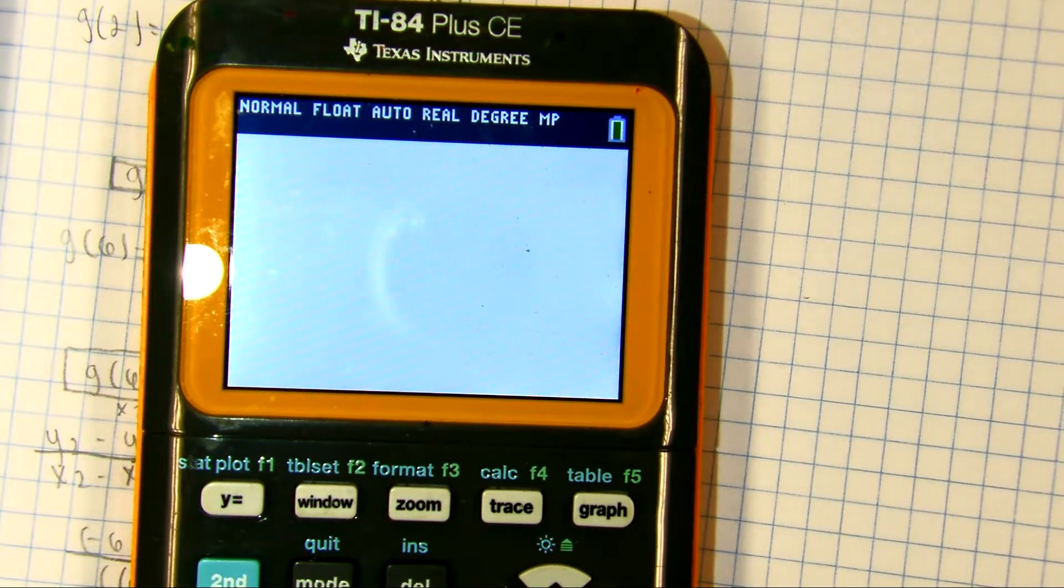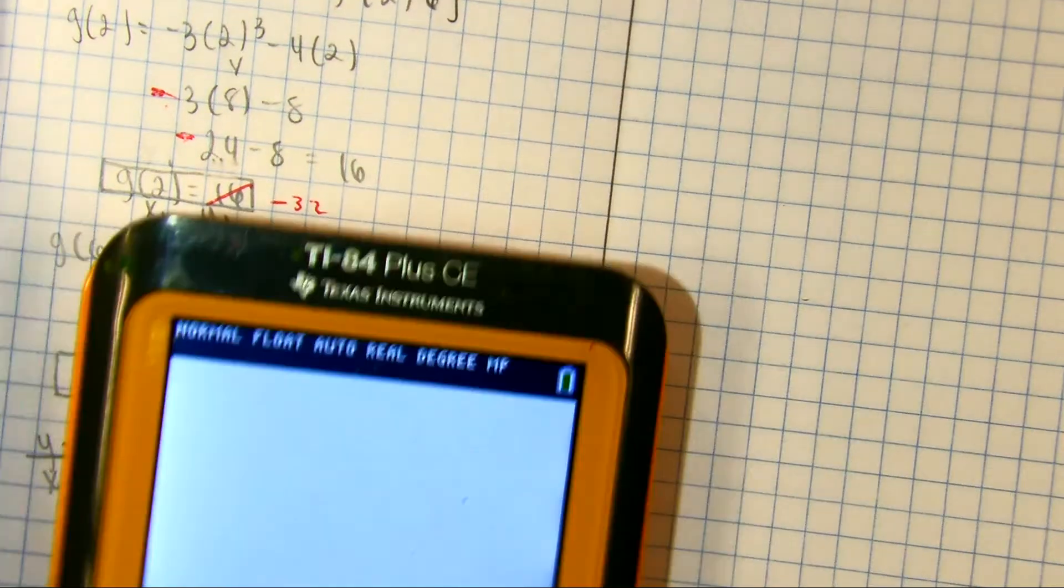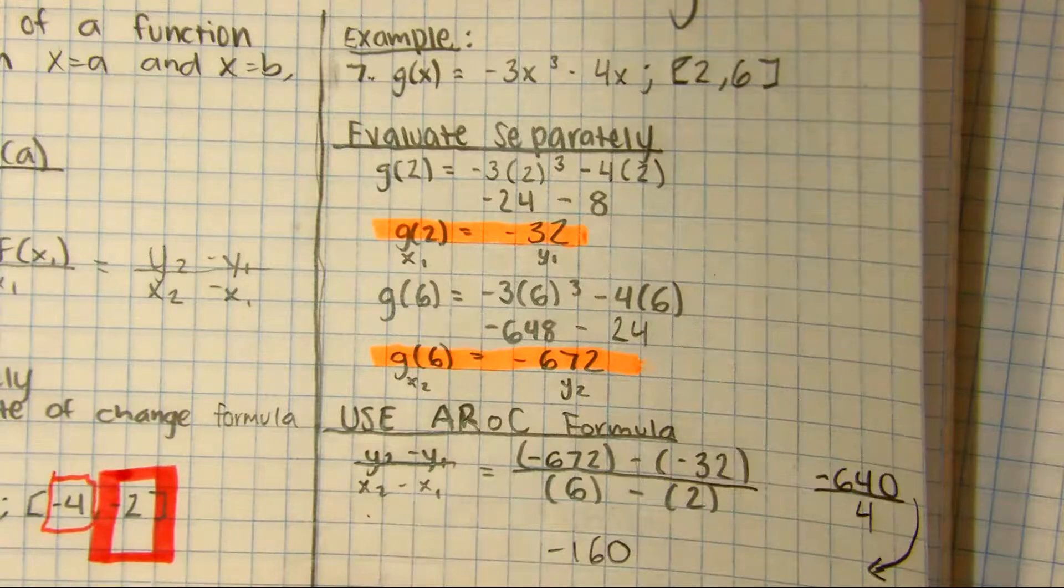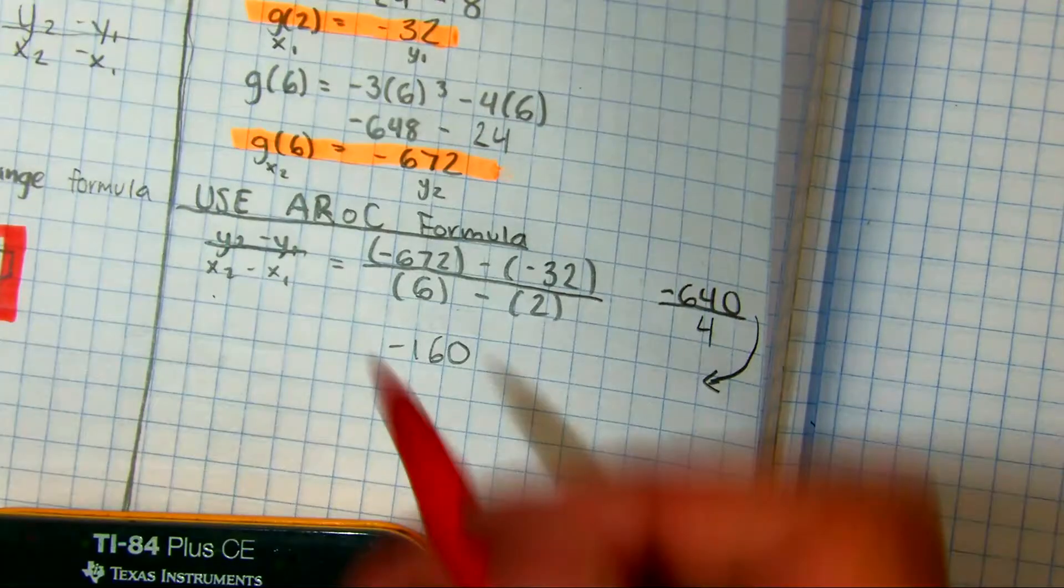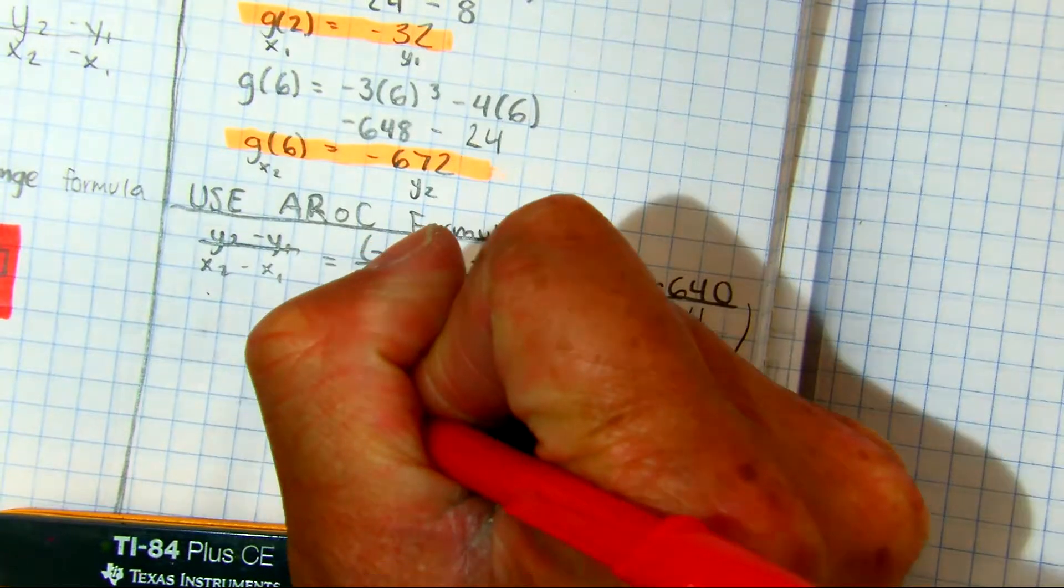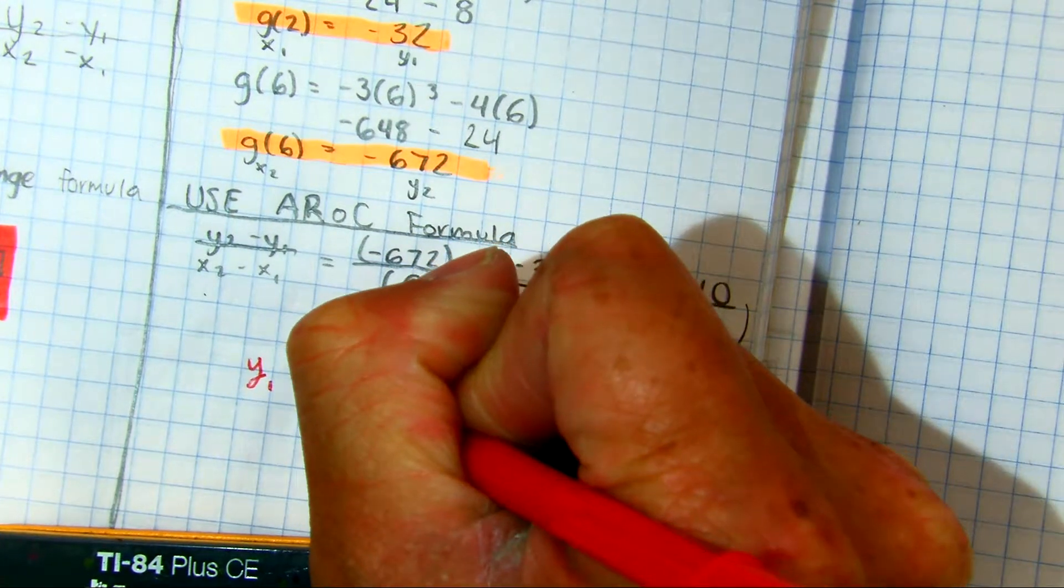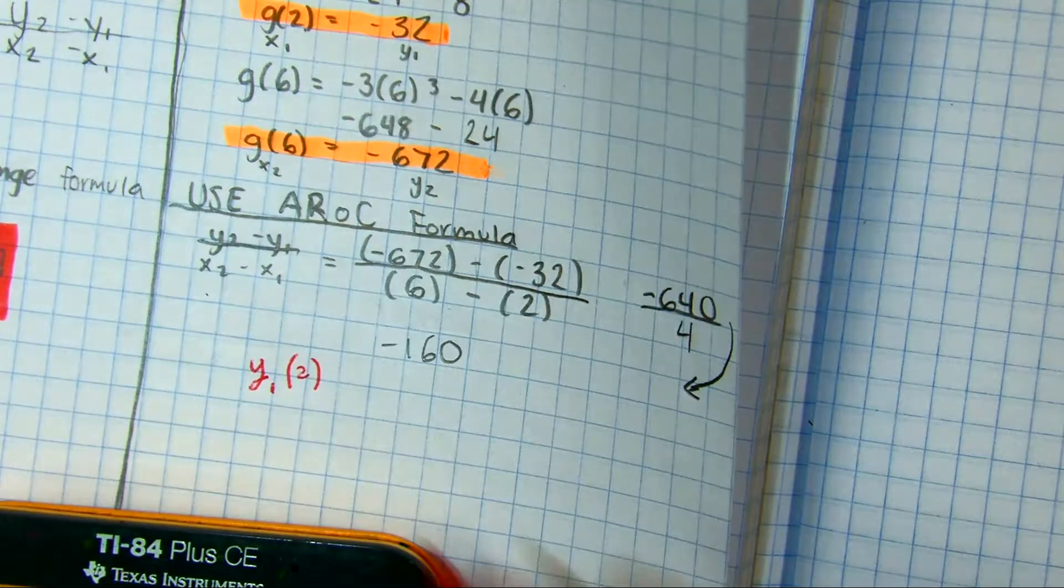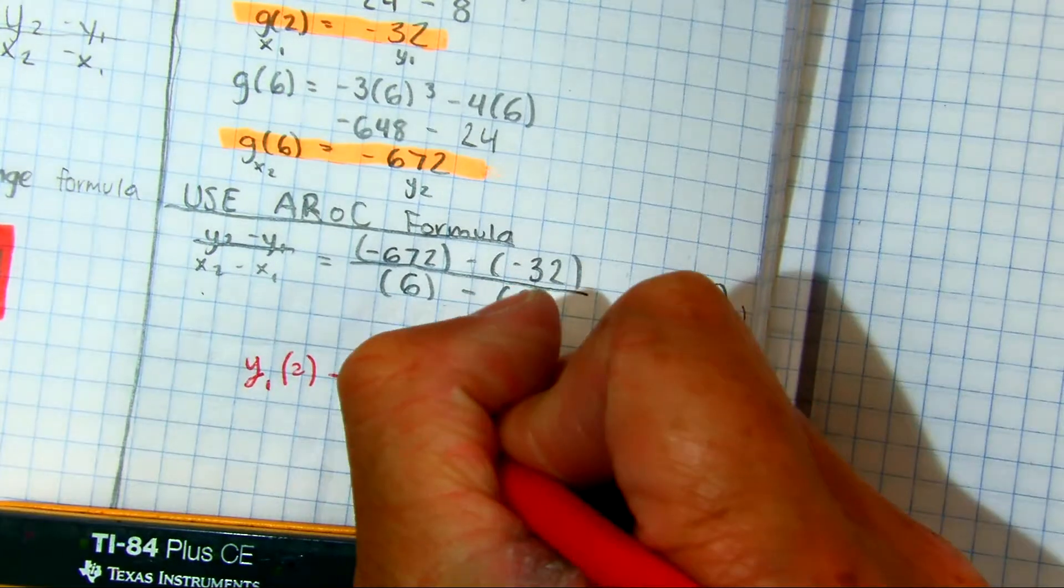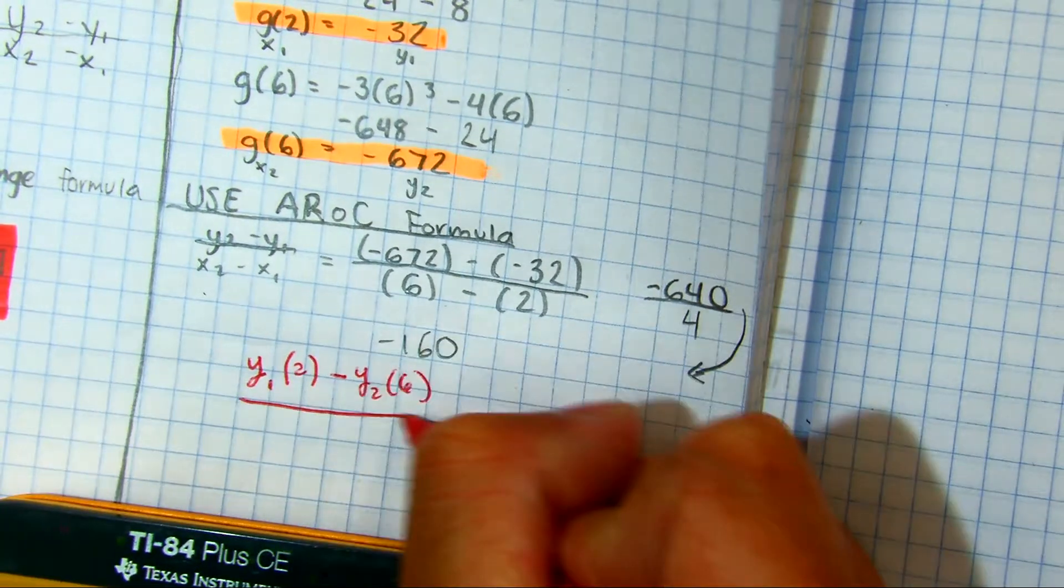So, what I'm going to do is I'm basically going to type in the formula itself. And the formula itself is essentially Y1. I'm substituting in 2. I'm subtracting that by evaluating the same function, but substituting 6. And then I'm going to do 2 minus 6.